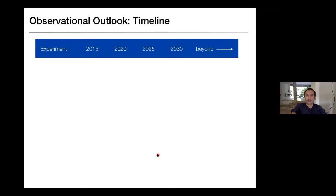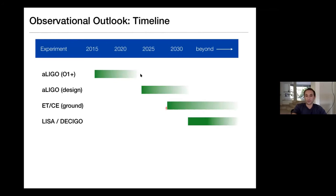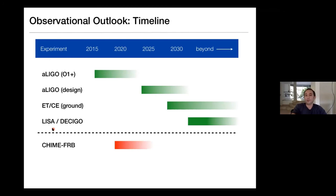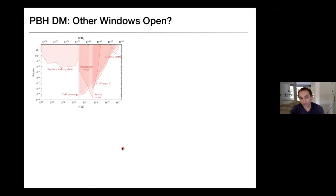The observational outlook: gravitational wave experiments should be going online within five to ten years, and will allow us to probe not just the mass spectrum but also the spin, the eccentricity, the stochastic background, and the clustering I described before. And we have these FRB experiments which may end up scooping the gravitational wave experiments in constraining this LIGO window, because they are already taking place. I really believe this is a strong constraint.